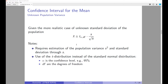Now let's move to the more realistic case where the population standard deviation is unknown. We have to estimate it using s, which divides by n minus 1. This matters more when the sample size is small. The approach is similar, but we can no longer use the z-value; instead, we must use what is called the t-value, based on the Student's t-distribution.